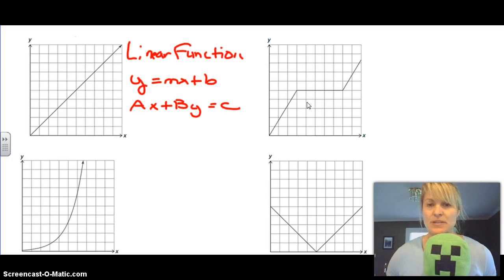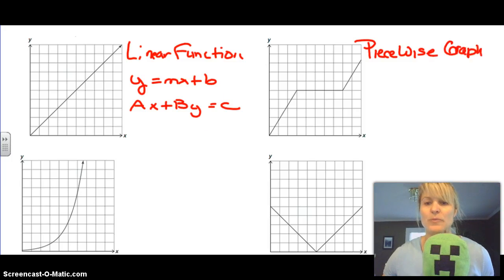The second graph here is called a piecewise graph. Remember that because it's in different pieces. It's going to be pieces of lines - a piecewise graph is always sections of lines. Therefore, the equation depends on how many pieces there are to this graph.